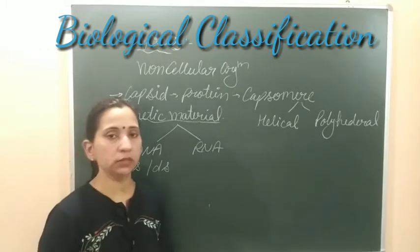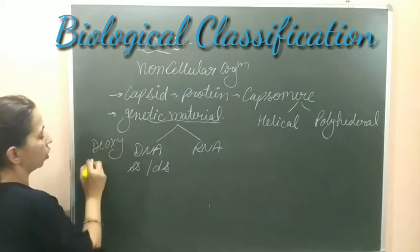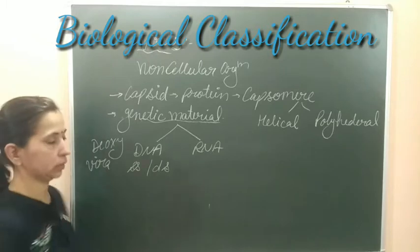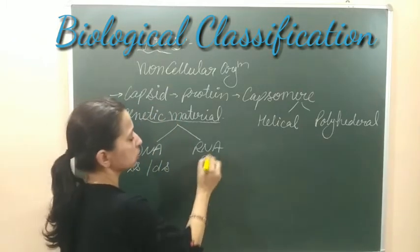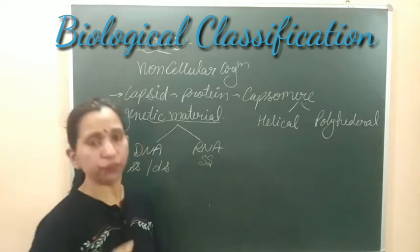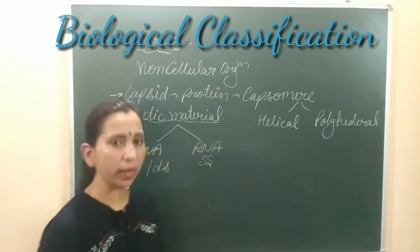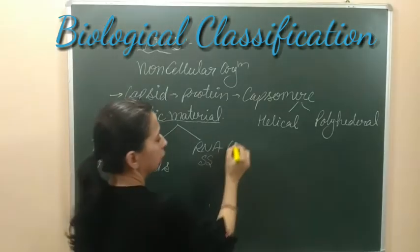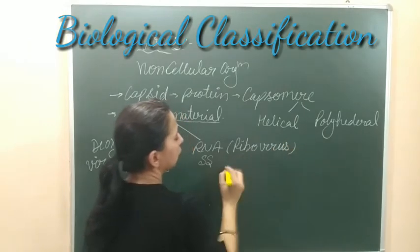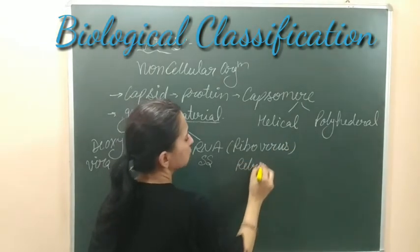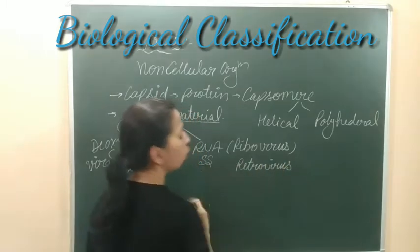DNA-containing viruses are known as deoxyviruses or DNA viruses. If the virus contains RNA, the RNA could be present as single-stranded RNA, and such viruses are known as RNA viruses or riboviruses. Another name used for RNA-containing viruses is retroviruses.